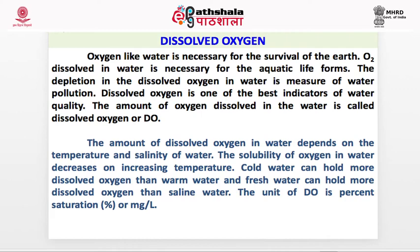Now we will discuss dissolved oxygen. Oxygen, like water, is necessary for the survival of life on earth. O2 dissolved in water is necessary for aquatic life forms. The depletion of dissolved oxygen in water is a measure of water pollution. Dissolved oxygen is one of the best indicators of water quality. The amount of oxygen dissolved in water is called dissolved oxygen or DO. The amount of dissolved oxygen depends on the temperature and salinity of water. The unit of DO is % saturation, that is milligrams per liter.